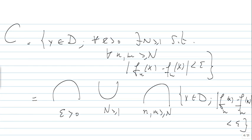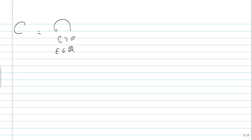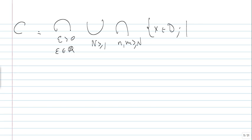The issue here is that we have to be careful, because we are taking epsilon to be any positive real number. But by the density of the rationals, C is the same set if we restrict ourselves to positive rational epsilon. So C equals the intersection over positive rational epsilon, of the union over N, of the intersection over n and m greater than N, of the set of x in D such that |F_n(x) - F_m(x)| < epsilon.